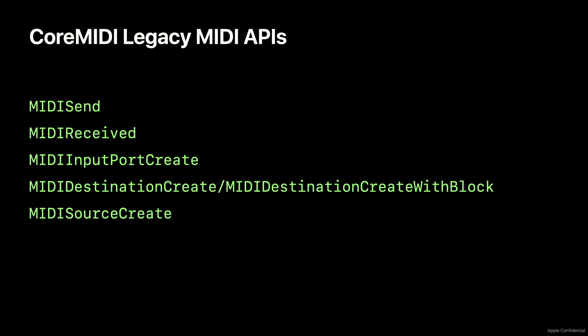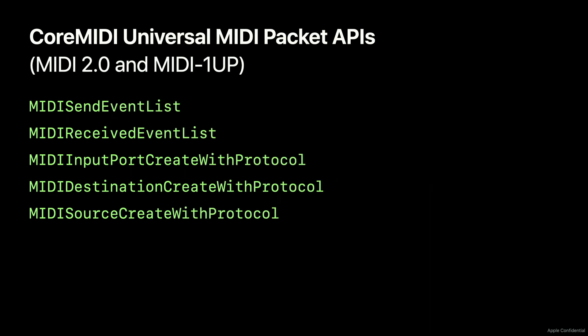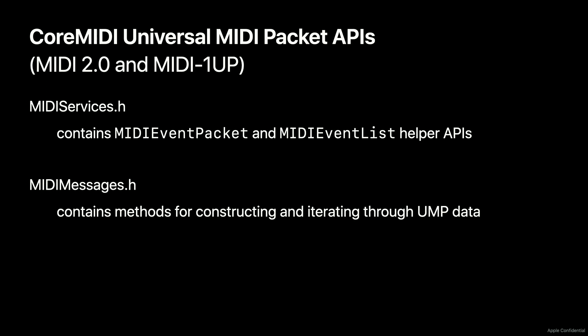If you've used Core MIDI before, these APIs are all familiar to you. MIDI send and MIDI received use the legacy APIs MIDI packet and MIDI packet list. The legacy APIs have all been updated to make use of MIDI event packet and MIDI event list and to allow flexibility in your protocol selection. Core MIDI handles all I/O in MIDI 2.0 natively and, if necessary, converts to the receiver's protocol upon delivery. That means anything you would do in MIDI 1.0, you can now do in MIDI 2.0 and still communicate to MIDI 1.0 listeners in their native protocol via this automatic translation. You'll find all those APIs in the MIDIServices.h header file alongside their MIDI 1.0 APIs, which have now been deprecated but not removed, as well as some useful helper APIs.